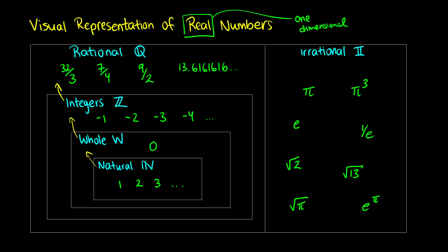Rational numbers can be integers, whole numbers, natural numbers, but you also have fractions — things like 9 over 2, which you might see written as 4.5. Either way it's written, it's still a rational number. 7 over 4 you see written as 1.75 — still rational. And in the case of 13.616161 and so on, we see this repeated pattern, so it is a rational number because we can predict what the next numbers in the sequence are.